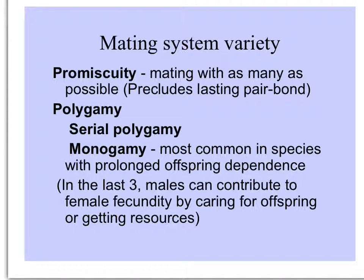Monogamy — partners for life, or at least for a breeding season — is most common in species with prolonged offspring dependence on the parents. In between these are different kinds of polygamy, with one sex mating with multiple individuals of the other sex. In both polygamy and monogamy, males can contribute to female fecundity by sharing offspring care or getting resources for the female and their families.